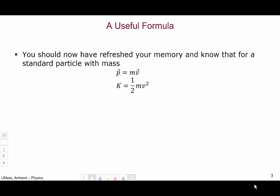By now you should have refreshed your memory and know that for a standard particle with mass such as an electron, the momentum of the particle is related to its mass times its velocity, and the kinetic energy of the particle is one-half mv squared. If you look at these two expressions, they are fairly similar. Both involve the mass of the particle m and its velocity v.